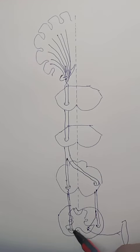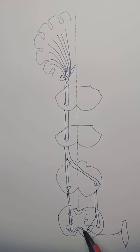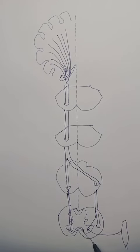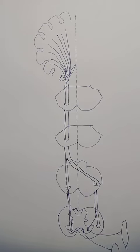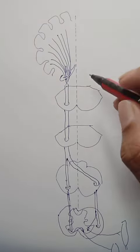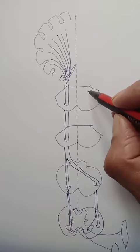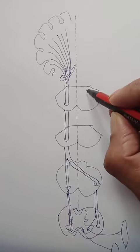The uncrossed fibers end on the anterior motor neuron and through interneurons reach the opposite anterior motor neurons, forming lower motor neurons. They also form corticobulbar fibers.